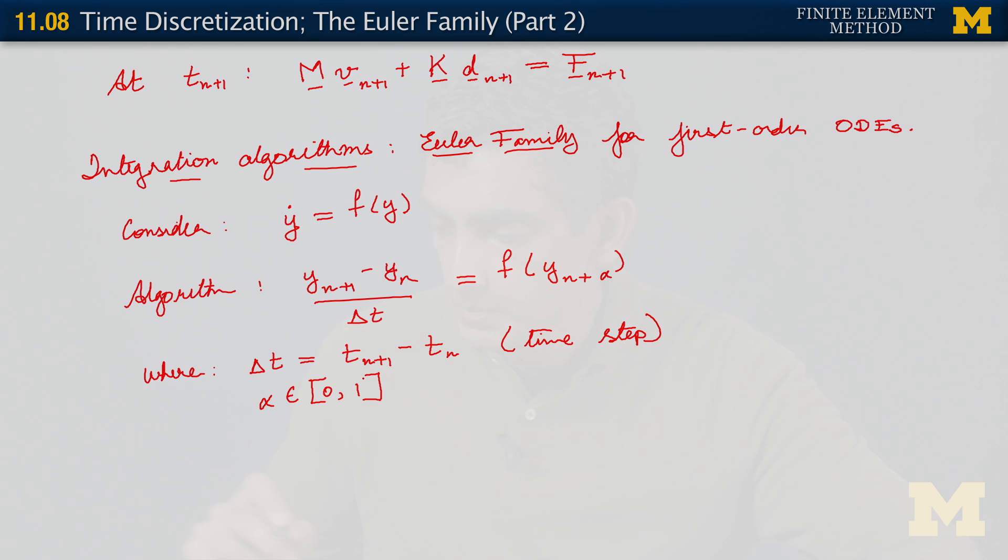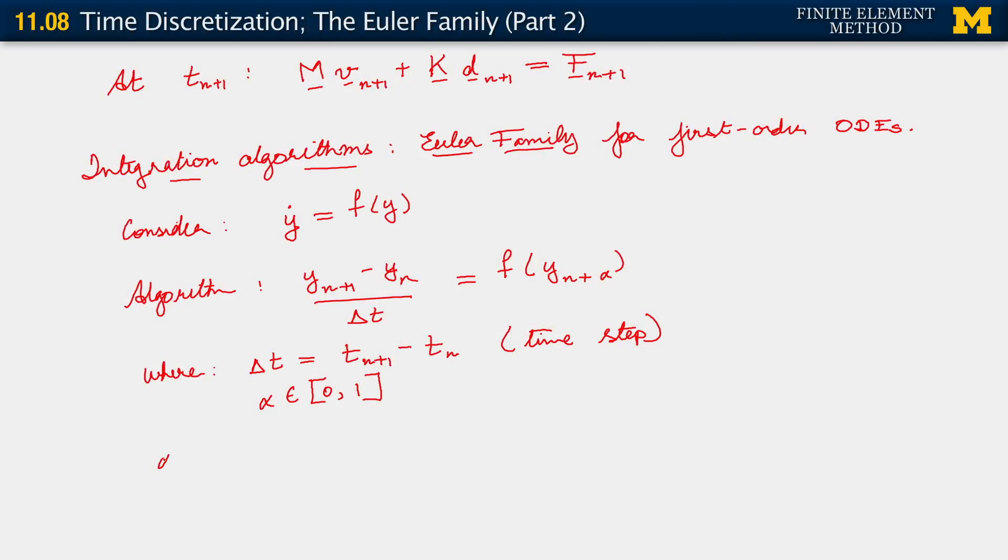We have this setting and since we're talking about the Euler family here for the very first time, let me introduce you to the members of the Euler family. So we have the following sort of setting. For alpha equals 0, this is called the forward Euler method.